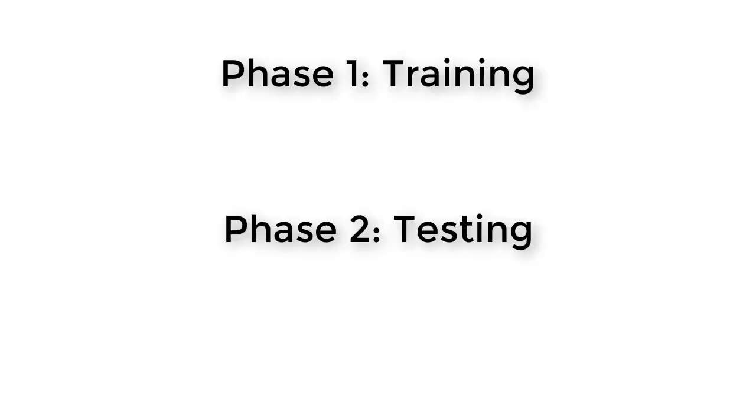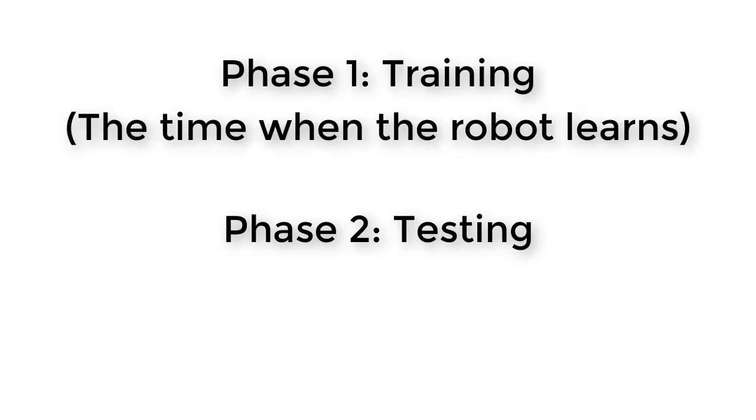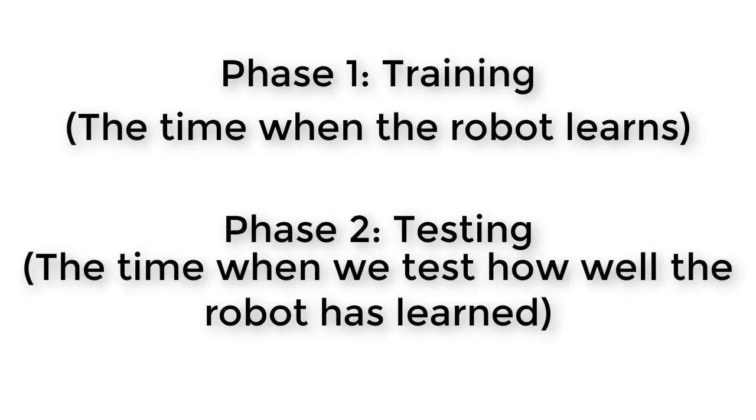Any machine learning algorithm is split up into two different phases, called the training phase and the testing phase. The training phase is the time when the robot is learning, and the testing phase is the time when we stop learning and check to see how well the robot has learned what we wanted it to learn.